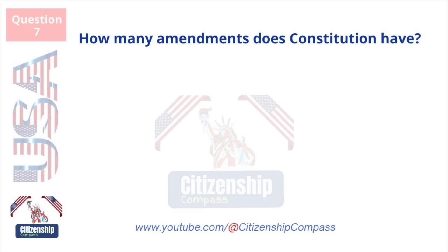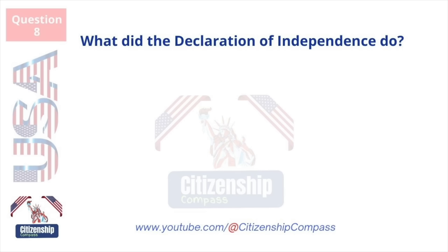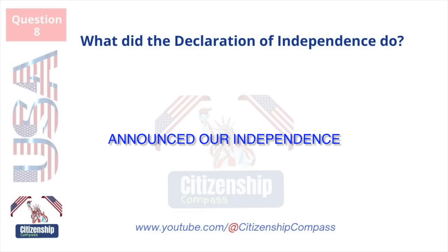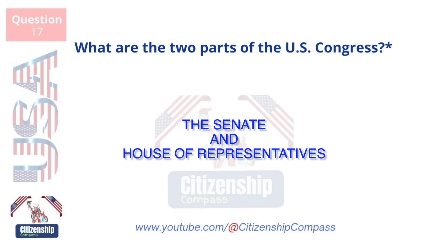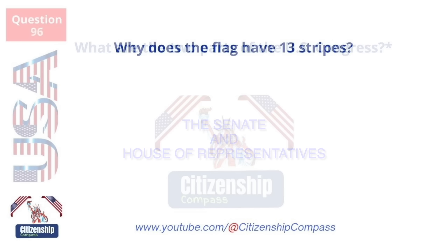How many amendments does the Constitution have? Twenty-seven. What did the Declaration of Independence do? Announced our independence from Great Britain. What are the two parts of the U.S. Congress? The Senate and House of Representatives.